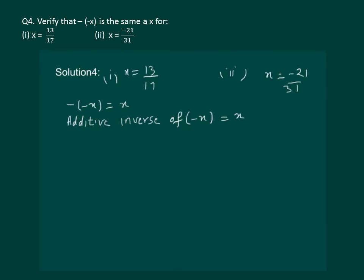Let us start with the first part. We have x equal to 13 by 17. Then additive inverse of 13 by 17 is minus 13 by 17. That means minus x is equal to minus 13 by 17.